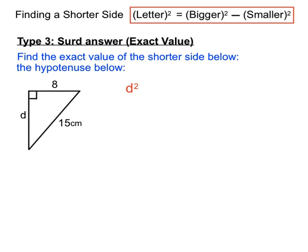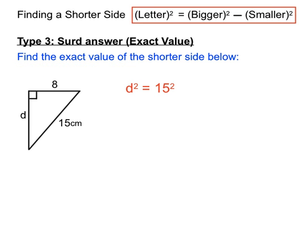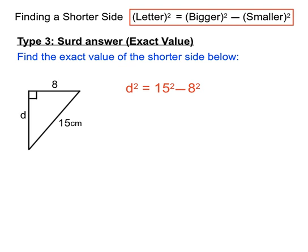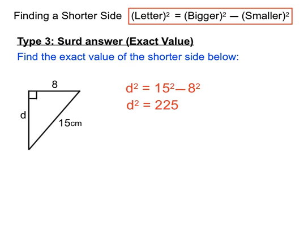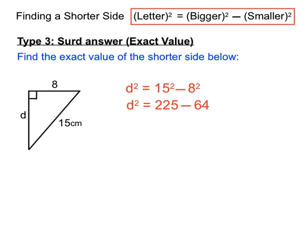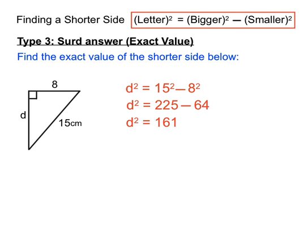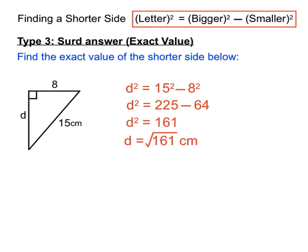So we'll have the letter squared, this time it'll be d squared equal to the bigger number squared—in this case 15 squared—minus the smaller number squared—in this case 8 squared. We'll process that: d squared, now 15 squared equals 225 minus 8 squared which is 64. We'll do that subtraction and we'll get d squared equals 161. Now to get d on its own we'll square root, but we'll leave our answer there. Square root of 161 is an exact value, and the question wants us to leave that there rather than processing it further.